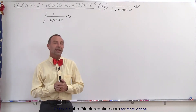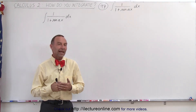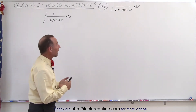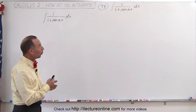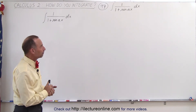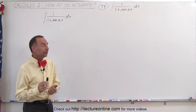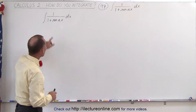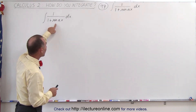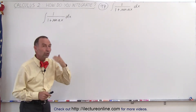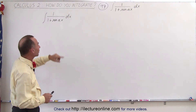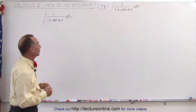Welcome to our lecture online. Here we have another example of how to integrate 1 over 1 plus the sine of Ax. The trick here, since we have 1 plus the sine of Ax in the denominator, is to multiply both the numerator and the denominator by the conjugate of the denominator.